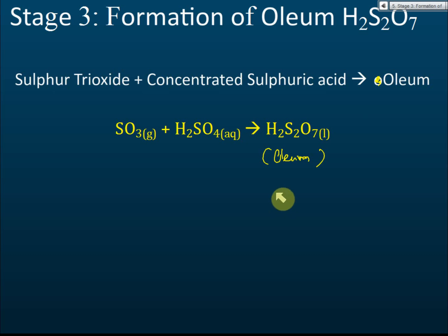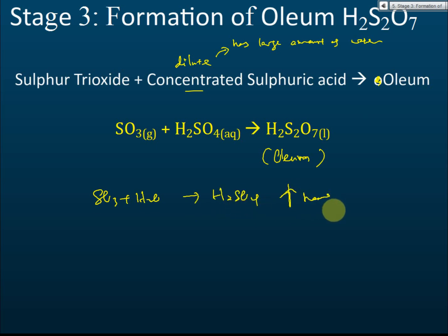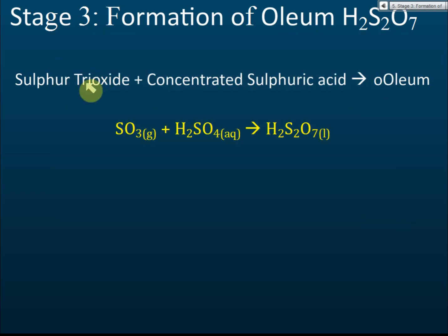Why do we use concentrated sulfuric acid and not dilute sulfuric acid? Because dilute means there is a large amount of water present. If we use dilute sulfuric acid, the sulfur trioxide would dissolve in that water, producing a large amount of heat — the same problem as before. If we use concentrated sulfuric acid, the sulfur trioxide cannot react with water; it will only react with the sulfuric acid to produce oleum.